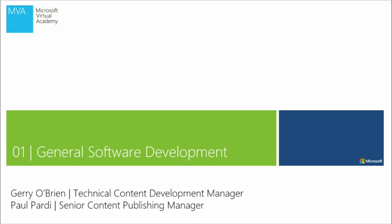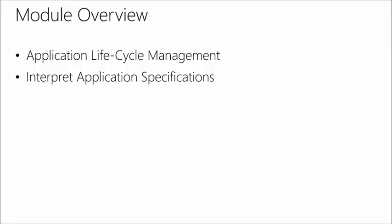Let's go ahead and take a look at our first module — general software development. As I mentioned in the intro, general software development will focus on a couple of key aspects that are not specifically related to coding. So we're not going to be writing or presenting code in this module. It's more about the processes you can expect to encounter as you start working as a software developer, whether as an individual developer or working in a larger shop like Microsoft. We'll take a look at application lifecycle management and how to interpret application specifications.